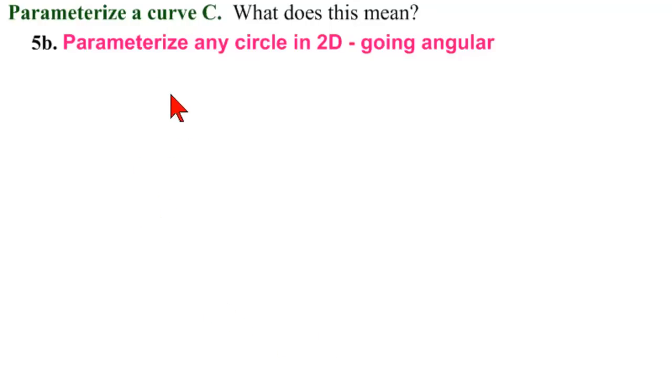We continue on our quest to learn how to parameterize the curve C. And in 5B, we're going to parameterize any circle in 2D by going angular. Remember, this means that the parameter measures the angle.